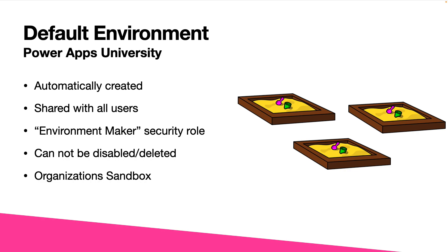With all the access that users have to this environment, Microsoft likes to call this the organization sandbox or personal productivity. This is where a user might come in and build their own personal automations, workflows, or apps — for example, if my boss emails me, do this — or apps specific to part of their job. But the one thing you don't want in the default environment is mission-critical or business applications that developers are building and pushing out to end users. Those should live in their own production environments.